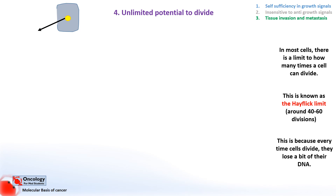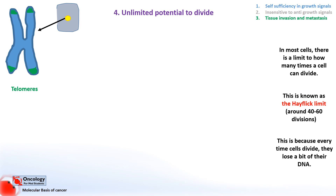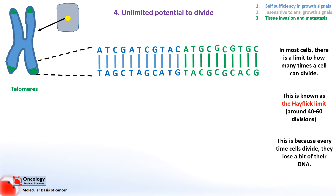Inside the nucleus of the cell there are chromosomes, which are lengths of folded DNA. Some of this DNA codes for proteins, as we've been talking about before. At the end of the chromosomes are stretches of DNA that don't code for proteins, called telomeres. Telomeres act as caps at the end of strands of DNA that protect them from damage. If we have a closer look at the end of the chromosome, we see the coding portion in blue and the telomere in green.